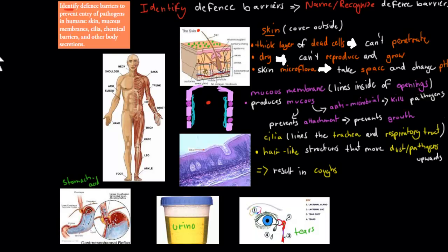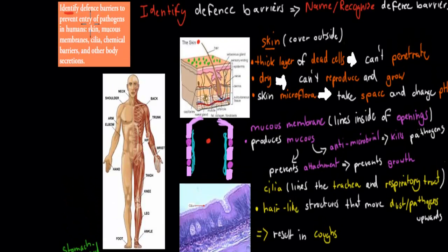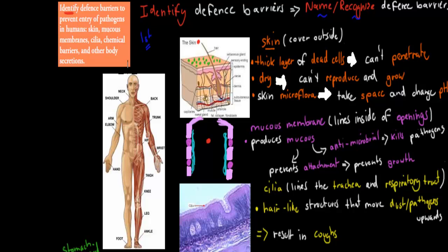The first one we're going to cover is: identify defense barriers to prevent entry of pathogens in humans, including the skin, mucous membranes, cilia, and chemical barriers in other body secretions. 'Identify' means name or recognize these defense barriers. This was the first line of defense — something that prevents pathogens from actually getting into our body and into our blood.